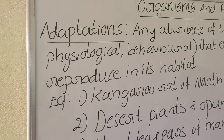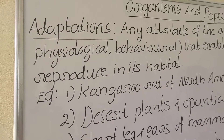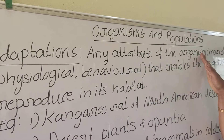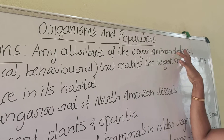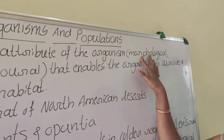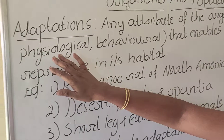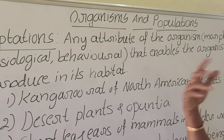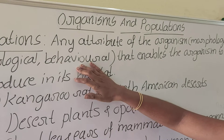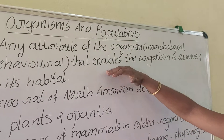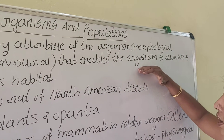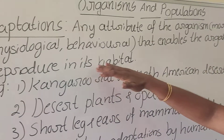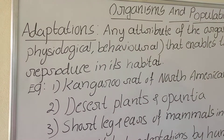Even under extreme environmental fluctuations, a characteristic attribute of an organism — it may be body shape, body form (morphological), physiological and metabolic actions, or behavioral reactions in a particular habitat — that enables it to survive and reproduce is what we call adaptation.